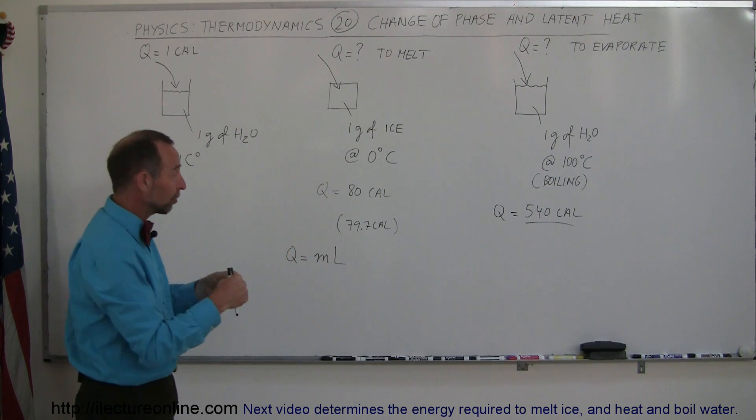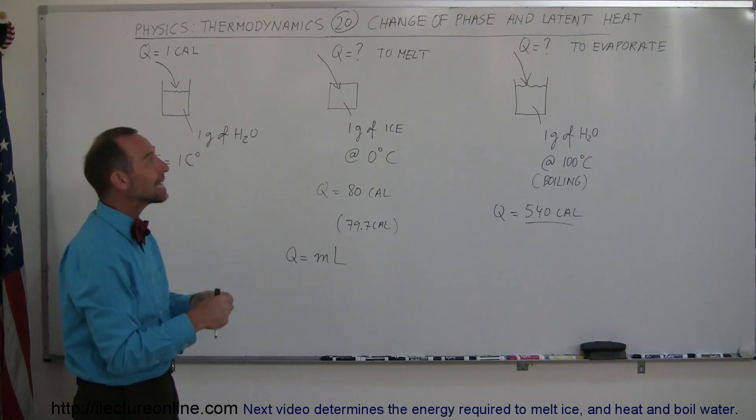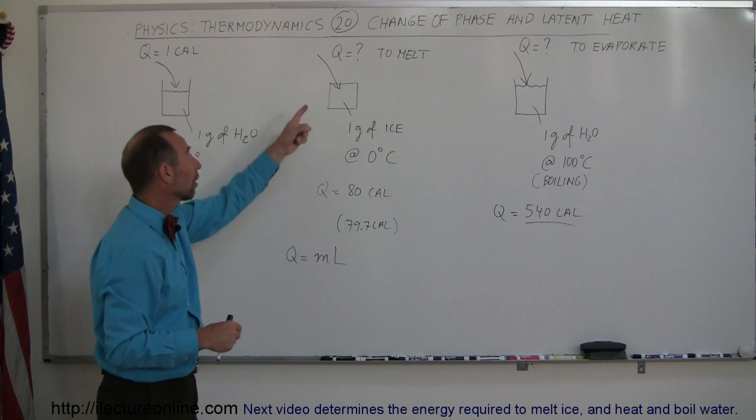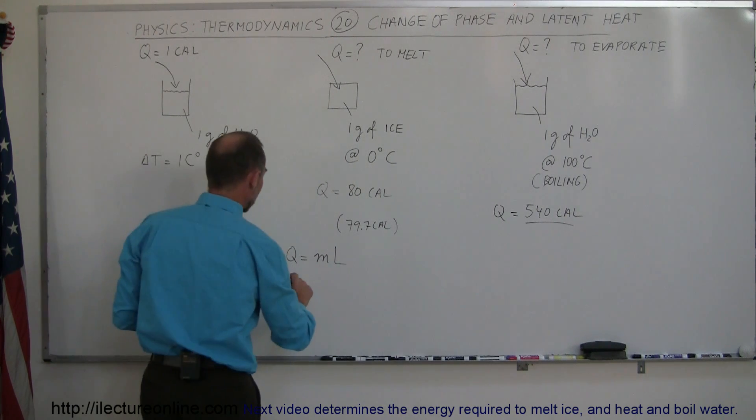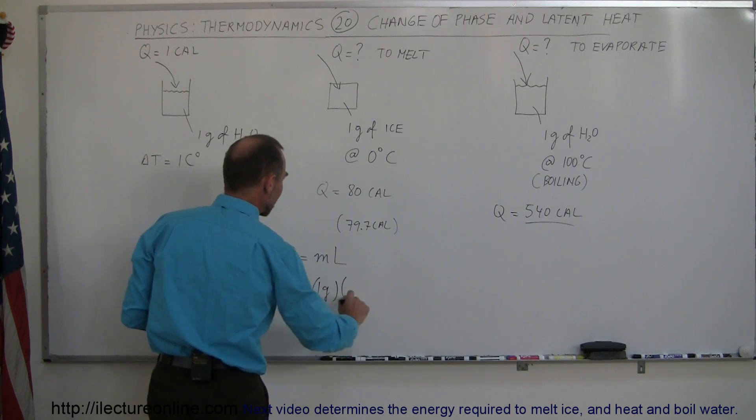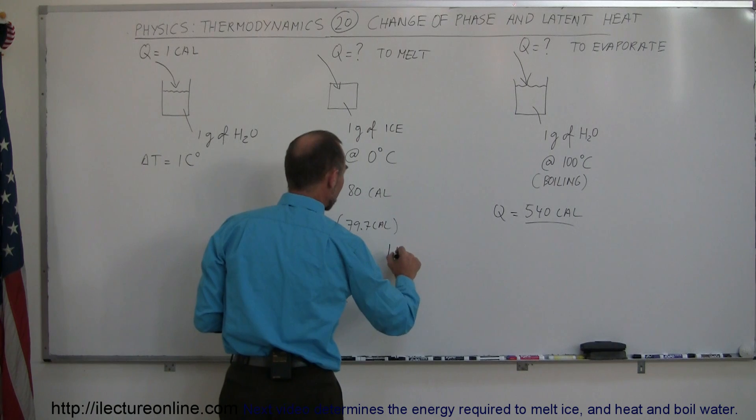The equation we use is Q equals M times L. M is the mass of the substance we're changing through a phase and L is what we call the latent heat of the material. The amount of heat required equals the mass, one gram, times the latent heat of fusion.